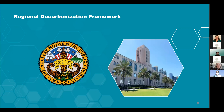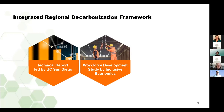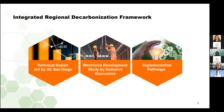Reconociendo la necesidad de un enfoque regional para abordar el cambio climático, en enero del año pasado la junta de supervisores votó para crear un marco regional de descarbonización. El objetivo de este marco es proporcionar vías con base científica para la elaboración de políticas en los gobiernos regionales del condado y de la ciudad, para reducir las emisiones de gases de efecto invernadero. Este marco es un documento visionario elaborado en colaboración con asociaciones público-privadas y aportaciones de la comunidad. Hay tres componentes: el informe técnico elaborado por la Universidad de California de San Diego, un estudio de desarrollo de la mano de obra realizado por Inclusive Economics para garantizar que los trabajadores locales se beneficien de las inversiones climáticas.